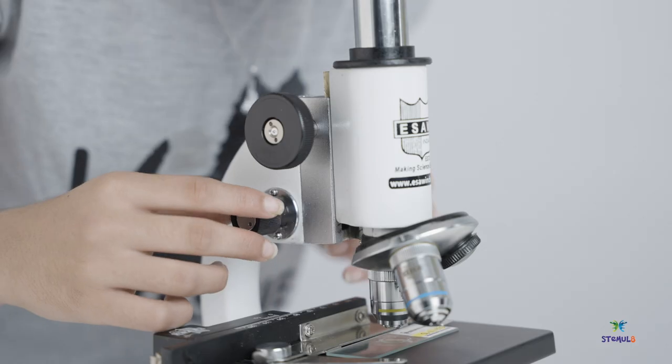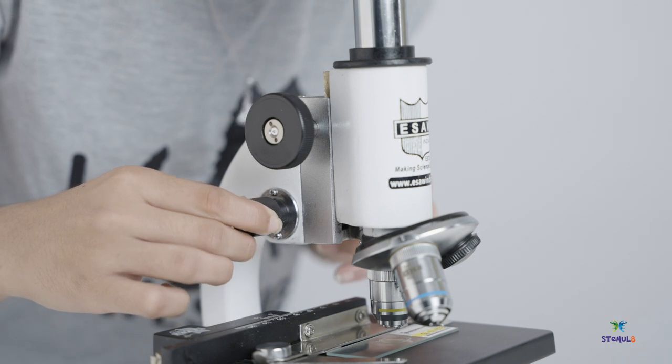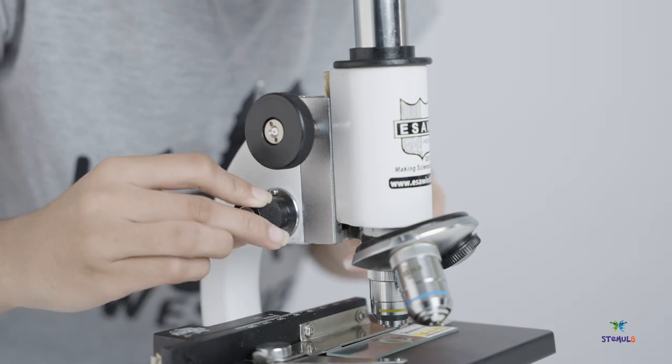Next, slowly rotate the fine adjustment knob, until you see a clear image of your specimen.